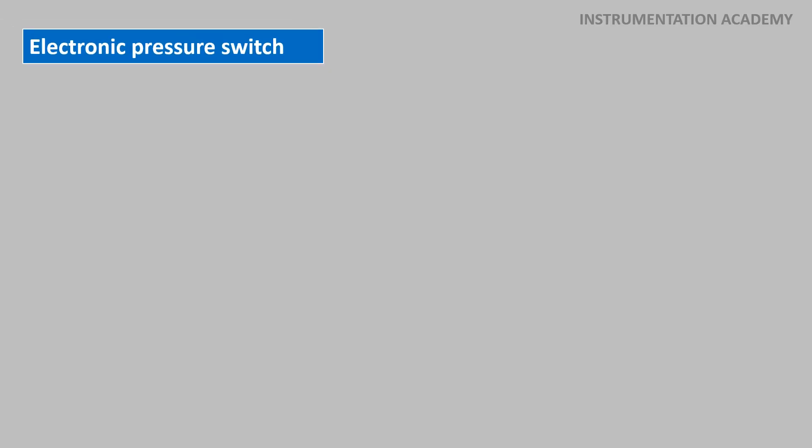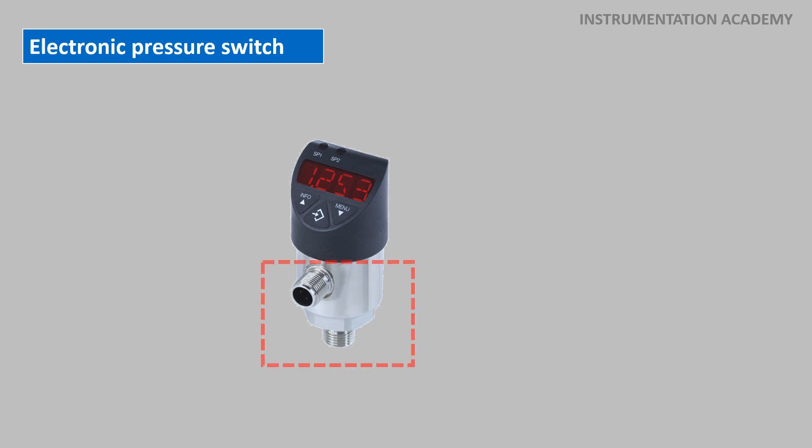Electronic pressure switch: An electronic pressure switch is a pressure sensing instrument which uses a pressure sensor and conditioning electronics which provides a switch output that is open or closed circuit using either a relay, NPN, or PNP output.